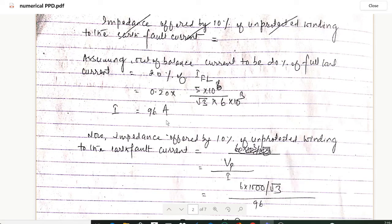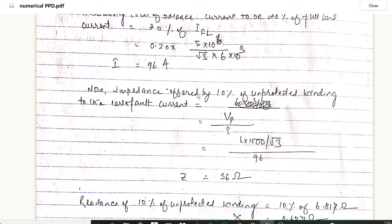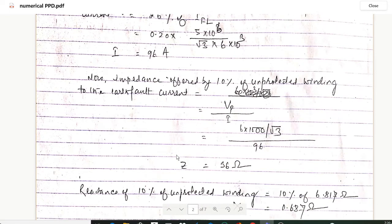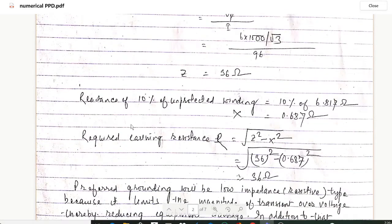Now impedance offered by 10 percentage of unprotected winding to the earth fault current: it will be Vp upon I. We have obtained kV as 6 kV, and here we have to use phase voltage. So 6 kV means 6 into 1000 upon root 3, and I means 96 amperes. We will get the value of Z, so Z will be 36 ohms.